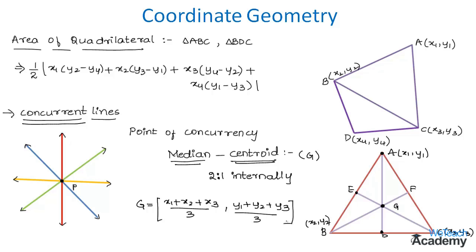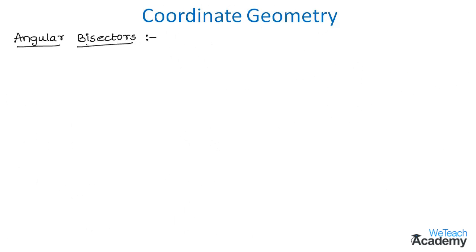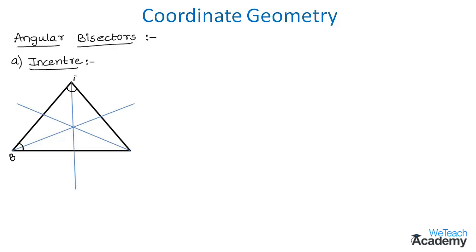Now let us discuss angular bisectors, starting with the incenter. The bisectors of the internal angles of triangle ABC are concurrent, and the point of concurrency is called the incenter, denoted by I. It is equidistant from the three sides of the triangle, and this distance is called the inradius of the triangle, denoted by r.